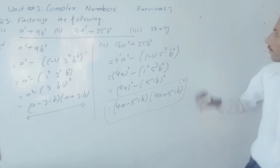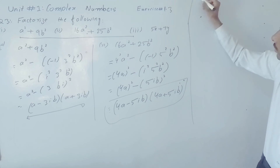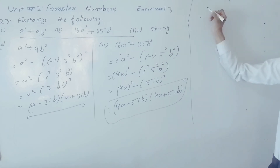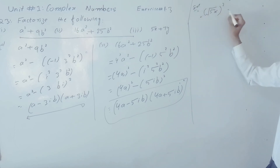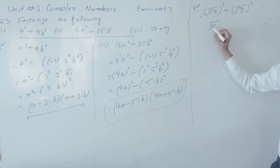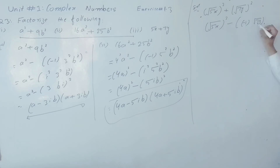Next, part number three: 5x² + 7y². So 5 can also be written in the form of (√5·x)², plus (√5·x)² minus multiply into minus 1, so (√7·y)² whole square.